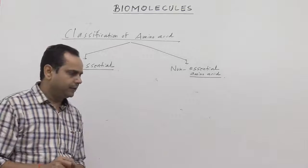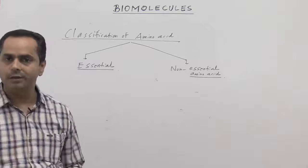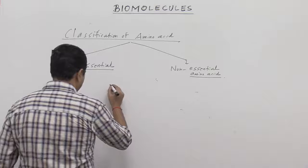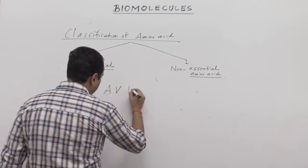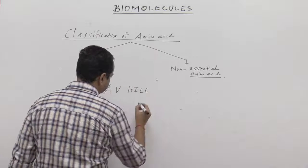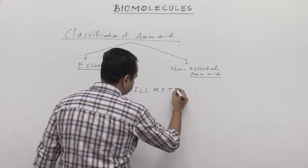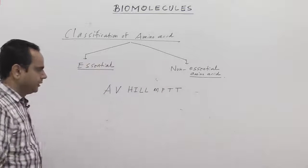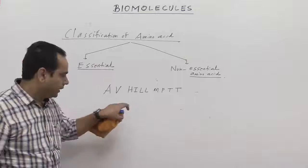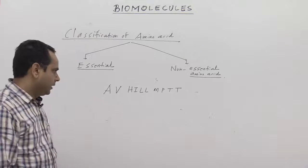There is a very small word to remember all essential and non-essential amino acids. The term is called AV Hill MPTT — just remember that word. AV Hill, you know the name of the scientist also — AV Hill MPTT.